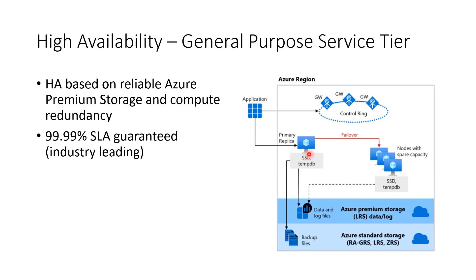So, in case this machine needs to go down — for whatever reason, whether it's a planned event such as rolling out the latest updates, or an unplanned event such as a hardware malfunction — the database instance will be moved to one of the nodes with spare capacity. There's going to be a small downtime event during this period, and since this instance does not have the buffer pool and caches fully primed, a small performance degradation until the caches are repopulated is possible and likely with the General Purpose service tier during failovers.